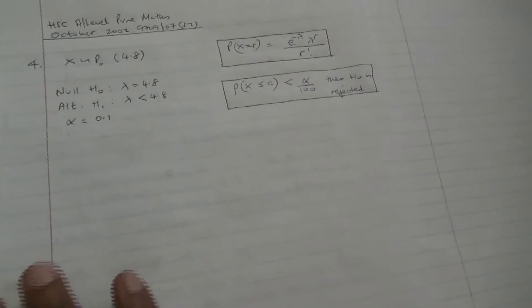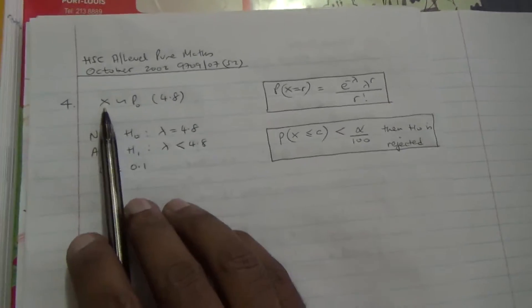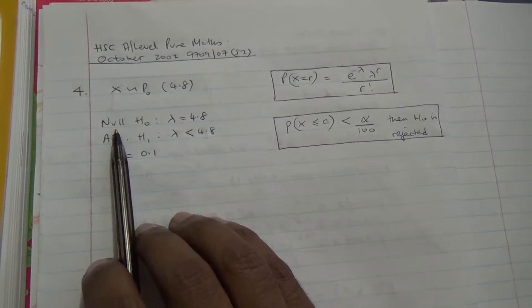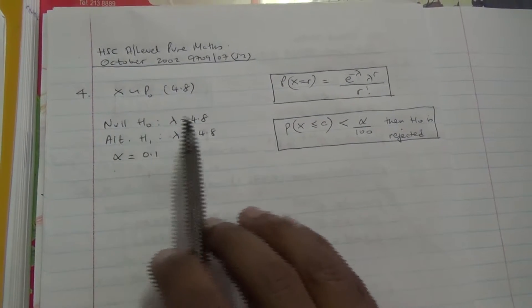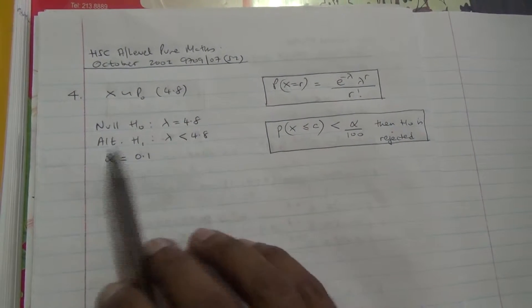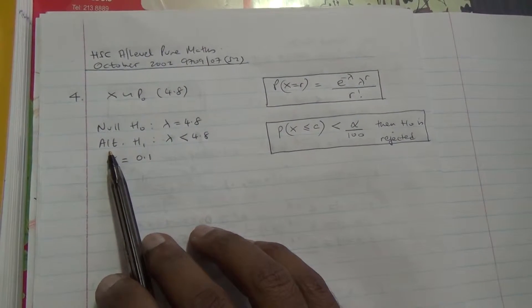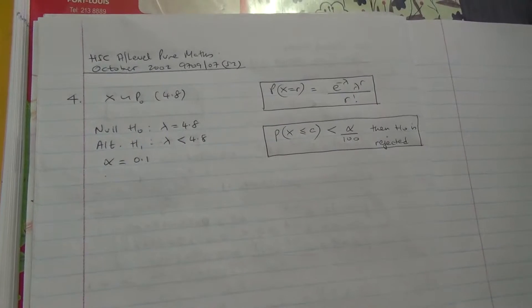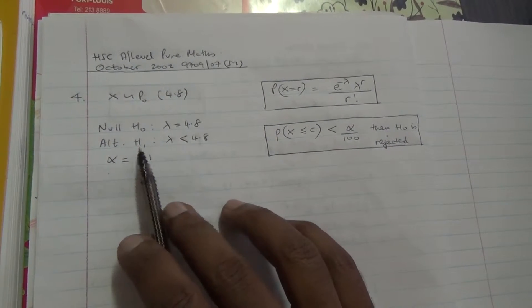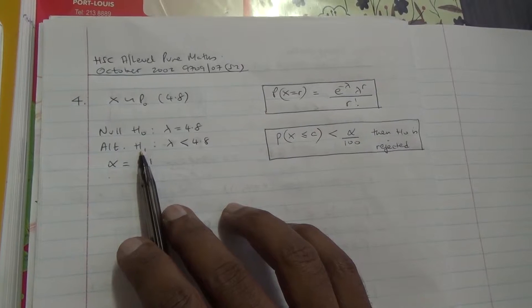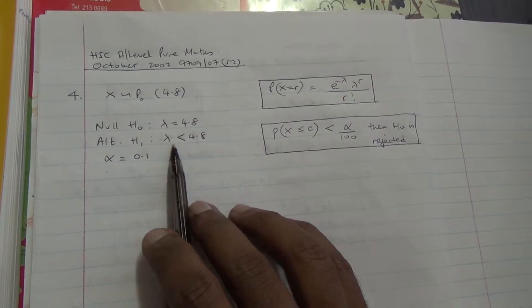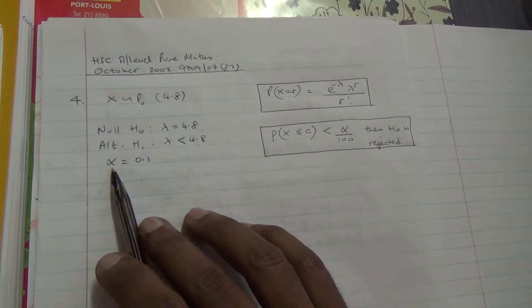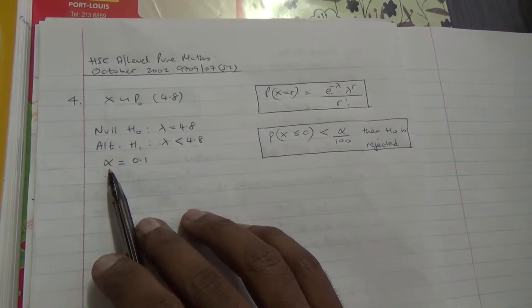Okay, so here are the information. It follows that X follows a Poisson distribution with mean lambda 4.8. Our null hypothesis H0 is that we are claiming that there is 4.8 accidents per month, but the alternate hypothesis H1 is saying that because the test was carried out and the number of accidents were found to be 2, therefore our alternate claim is that the average number of accidents is less than 4.8, and also the test level is going to be 0.1, 10%.